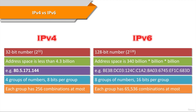128-bit IPv6 addresses are written using hexadecimal, as opposed to dotted decimal in IPv4. Because a hexadecimal number uses 4 bits, this means that an IPv6 address consists of 32 hexadecimal numbers. These numbers are grouped in 4s, giving 8 groups or blocks. The groups are written with a colon as a separator.